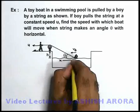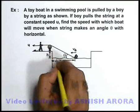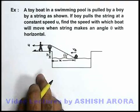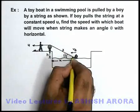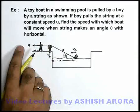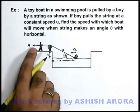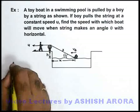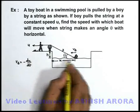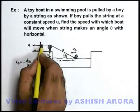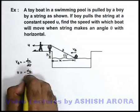Let us consider x as the distance of the boat from the edge of the swimming pool. If h is the height and the total length of the string is l, and this distance from the hand to the pool edge is y, then when the boy is pulling the rope, y is changing at a rate of u. So v_b equals minus dx/dt, because x is decreasing, and u equals minus dy/dt, because y is also decreasing.